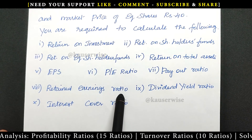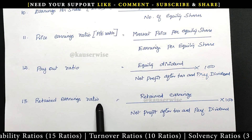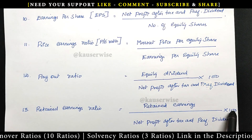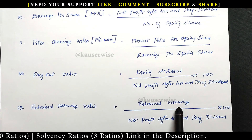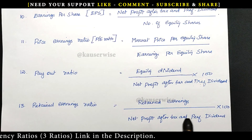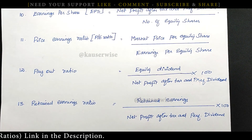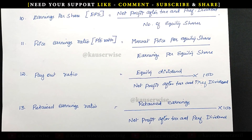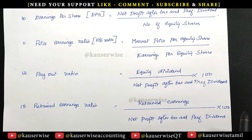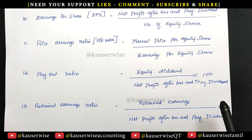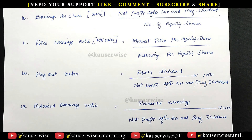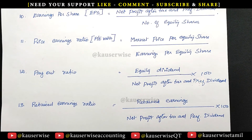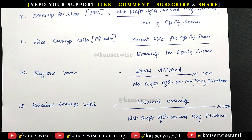The next one is retained earnings ratio. The formula is retained earnings divided by net profit after tax and preferential dividend, into 100. Retained earnings means out of current year profit after tax — after subtracting preferential dividend and any equity dividend declared — the residual amount that is kept. Every year, after declaring dividends, the rest is maintained as an internal fund. Here we calculate retained earnings of the current year.